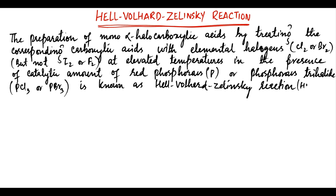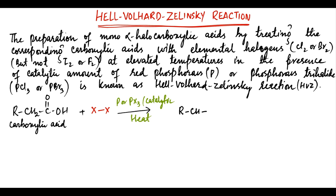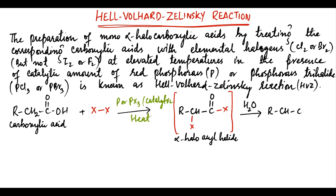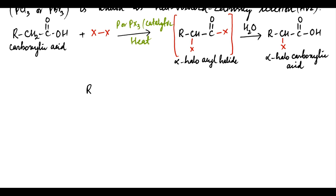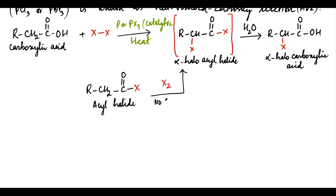For example, when a carboxylic acid is treated with halogen in the presence of PX3, an alpha-haloacyl halide is formed. This is then hydrolyzed to form alpha-halocarboxylic acid. If the reaction is started with an acyl halide, it can be directly treated with elemental halogen and no catalyst is needed. On heating, alpha-haloacyl halide is formed.